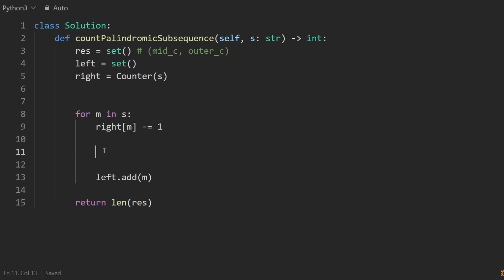Left set dot add this middle character. It's true we want to do that at some point. But before we do that, we want to now check for all the characters that are currently on the left side. Of course, on the first iteration, that'll be empty. But still, we want to go through every character on the left side.